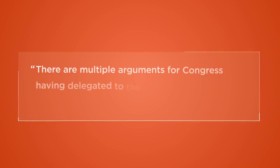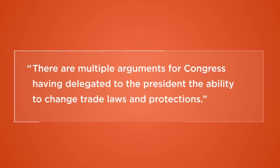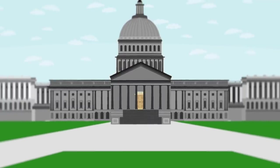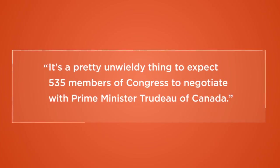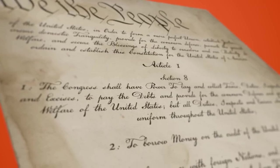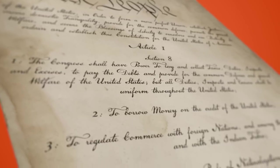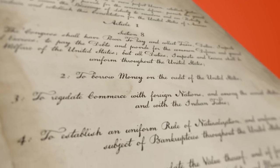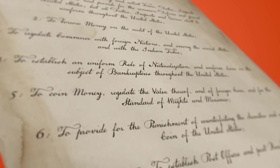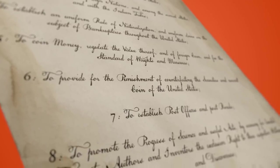There are multiple arguments for Congress having delegated to the president the ability to change trade laws and protections. One of them is that Congress is simply not an institution that can institutionally do it. Members of Congress can talk to representatives of foreign governments and attempt to persuade and influence them, but it's a pretty unwieldy thing to expect 535 members of Congress to negotiate with Prime Minister Trudeau of Canada. The strongest argument against delegation is that the Constitution says Congress is supposed to do it — Article 1, Section 8 states Congress shall have power to regulate commerce with foreign nations and to make all laws necessary and proper for carrying into execution the foregoing powers. So the power to regulate foreign trade is vested by the Constitution in Congress, with the president having a duty to faithfully execute the laws.